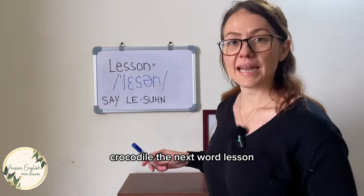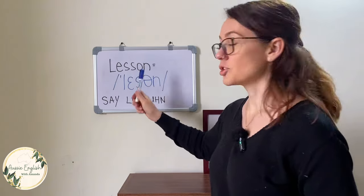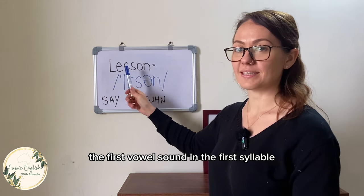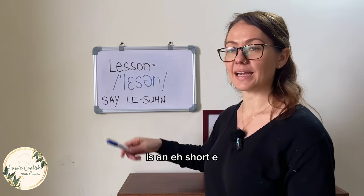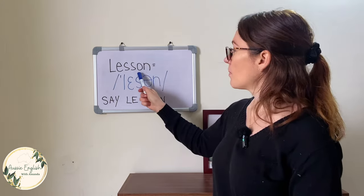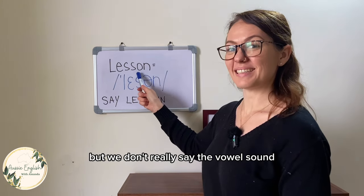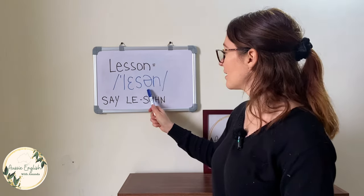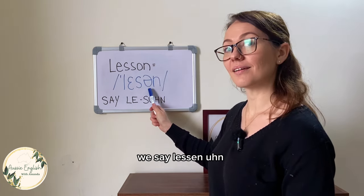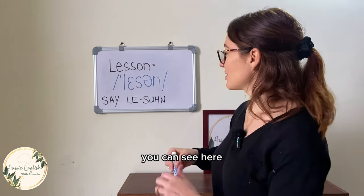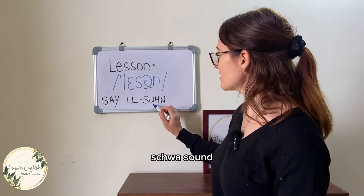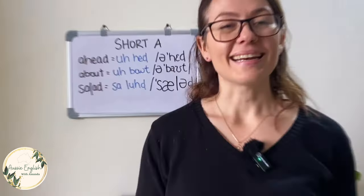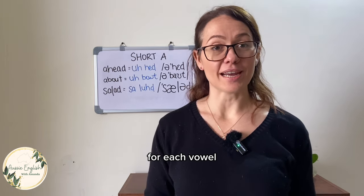The next word is 'lesson' — two syllables: les-son. The first vowel sound in the first syllable is a short E, the same as in 'egg'. But we don't really say the vowel sound in the second syllable clearly. We don't say 'les-SON' — we say 'les-sn'. So you can see the schwa sound there: les-sn. Now let's explore how the schwa sound substitutes for each vowel.